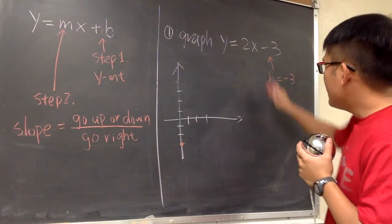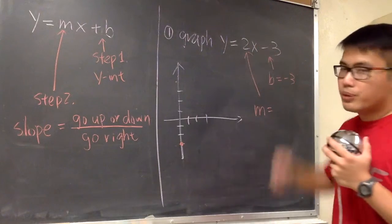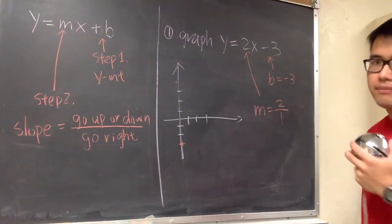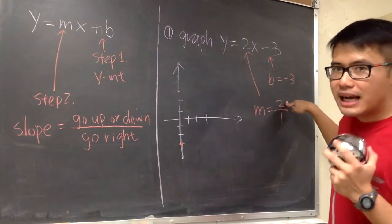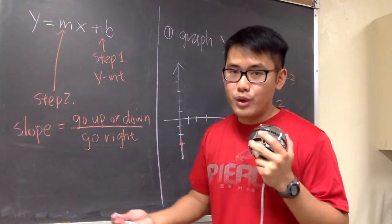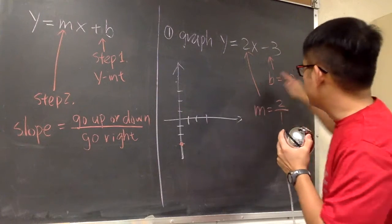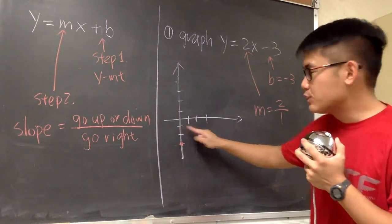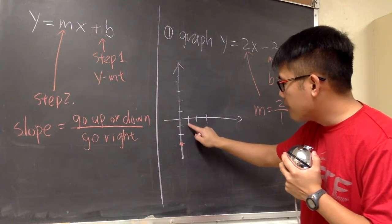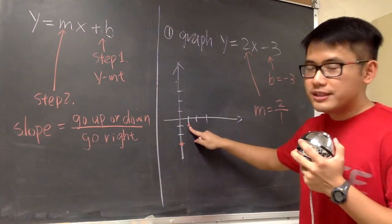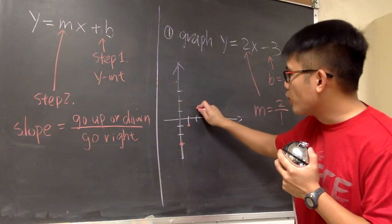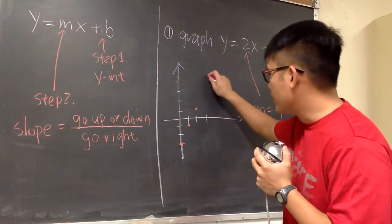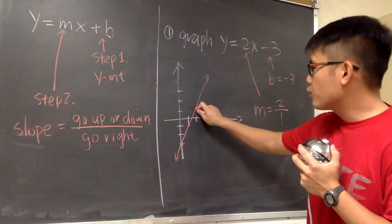Then we look at the slope, which is 2 — m is 2. As we talked about, we want to look at the slope as a fraction, so instead of just 2, let's write 2 over 1. The 2 on top tells us to go up 2 times from this point. Begin from the y-intercept, go up twice — 1, 2 — and then move to the right one time. That gives us our second point. You can repeat: go up twice and move right once more. Two points is enough — now just connect them with a straight line. That's the graph for this equation.